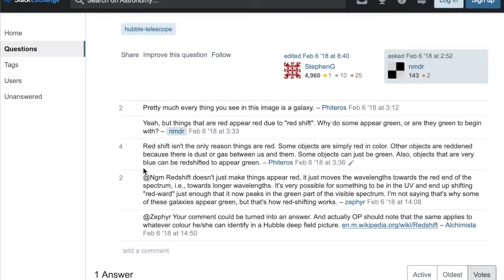Some objects can just be green. Also, objects that are very blue can be redshifted to appear green. Redshift doesn't just make things appear red. It just moves the wavelengths towards the red end of the spectrum, i.e. towards longer wavelengths. It is very possible for something to be in the UV and end up shifting redward just enough that it now peaks in the green part of the visible spectrum. I'm not saying that's why some of these galaxies appear green, but that's how redshifting works.